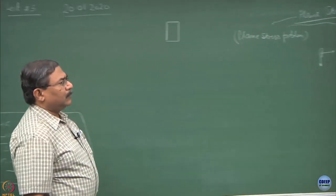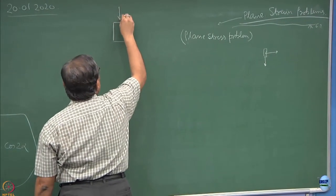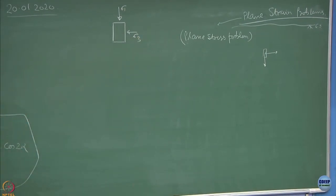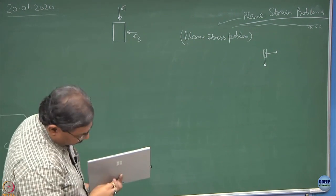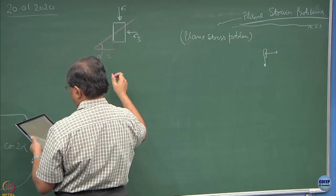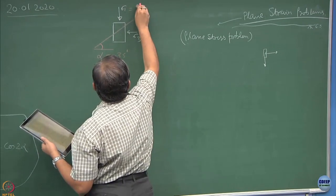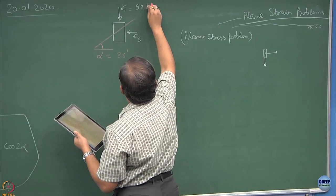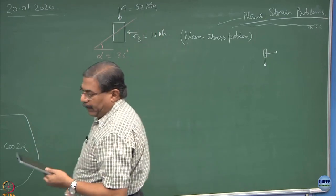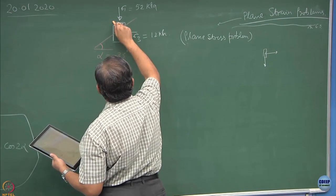So right now, we are going to deal with only plane strain problems. So if I take out this element and if I show here as sigma 1 and sigma 3, the statement of the problem is find out the state of stress at this plane, which is inclined at an angle alpha of let us say 35 degrees. Sigma 1 is 52 kPa, sigma 3 is 12 kPa, find out the state of stress at this point, which is nothing but sigma and tau.